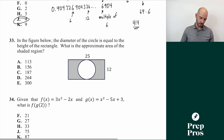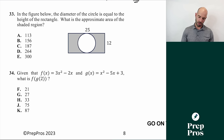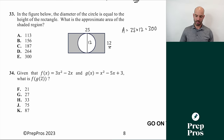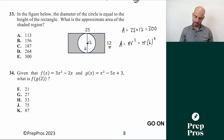Number thirty-three: find the area of the shaded region — a rectangle with a circle cut out. The rectangle is 25 by 12, giving area 300. The circle fits within the 12-unit height, so its radius is 6, and its area is pi times 6² equals 36 pi, approximately 113.09. Subtracting: 300 minus 113 gives approximately 187. The answer is C.